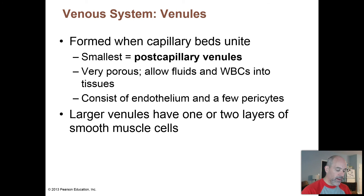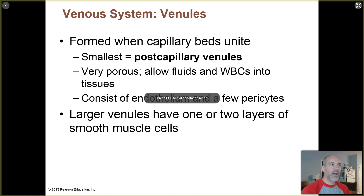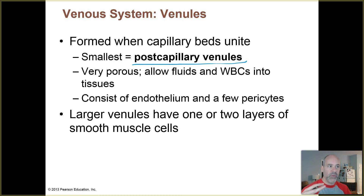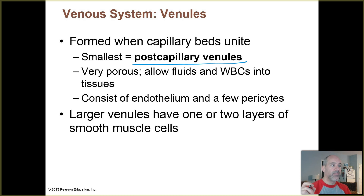Blood that has flowed through a capillary bed next moves into venules. Those are your smallest veins, and the smallest venules are called the post-capillary venules. These are actually very porous types of veins, so they themselves will take up surrounding fluids and even white blood cells can move in and out of the venules. We'll talk more about why that's important for white blood cells to get into your tissues when we study the immune system — it's important for their function and for the process of inflammation.